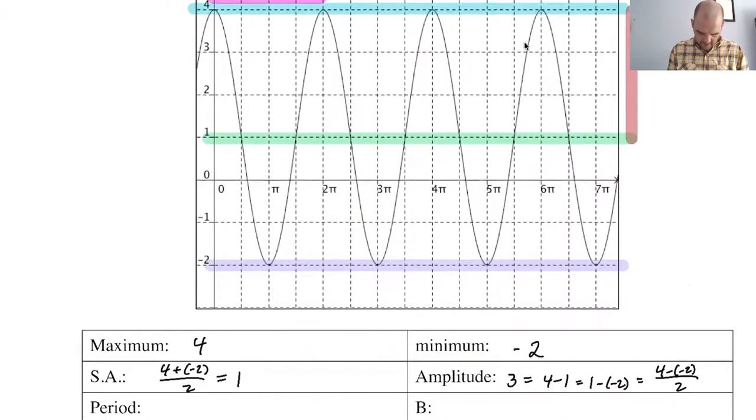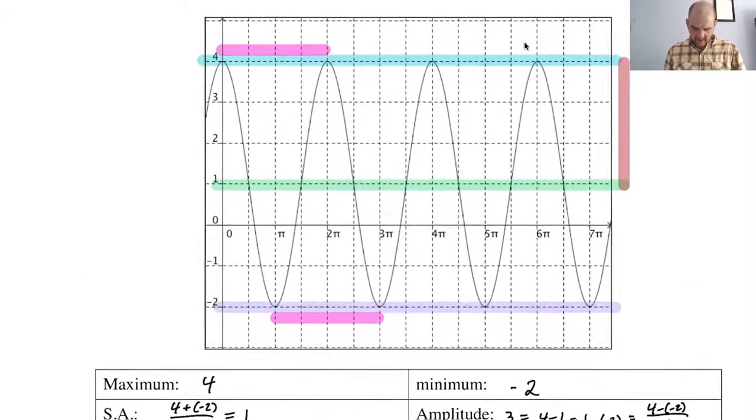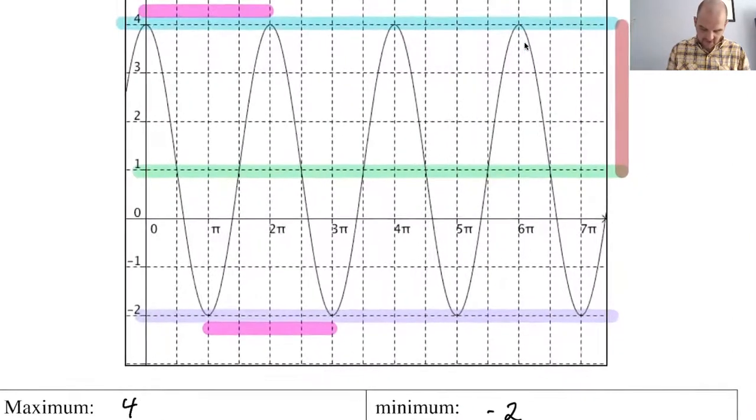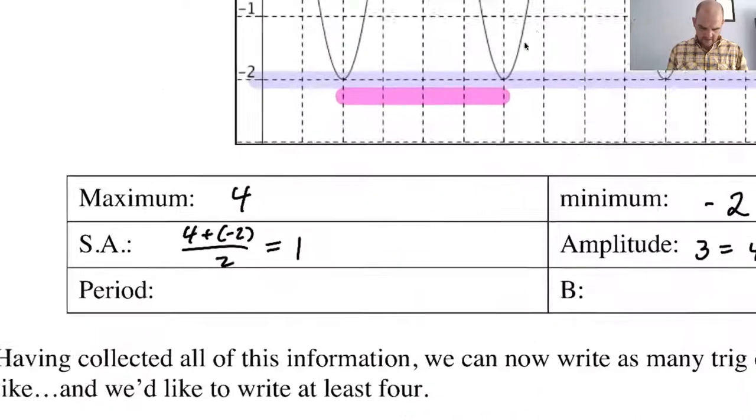You could also go from a minimum to a minimum. And you can see that would be two pi, or you can go intercept to intercept to intercept. You need to go more intercepts because there are more intercepts per period. So you could have done this. All of these would give us two pi though. So the period is two pi.